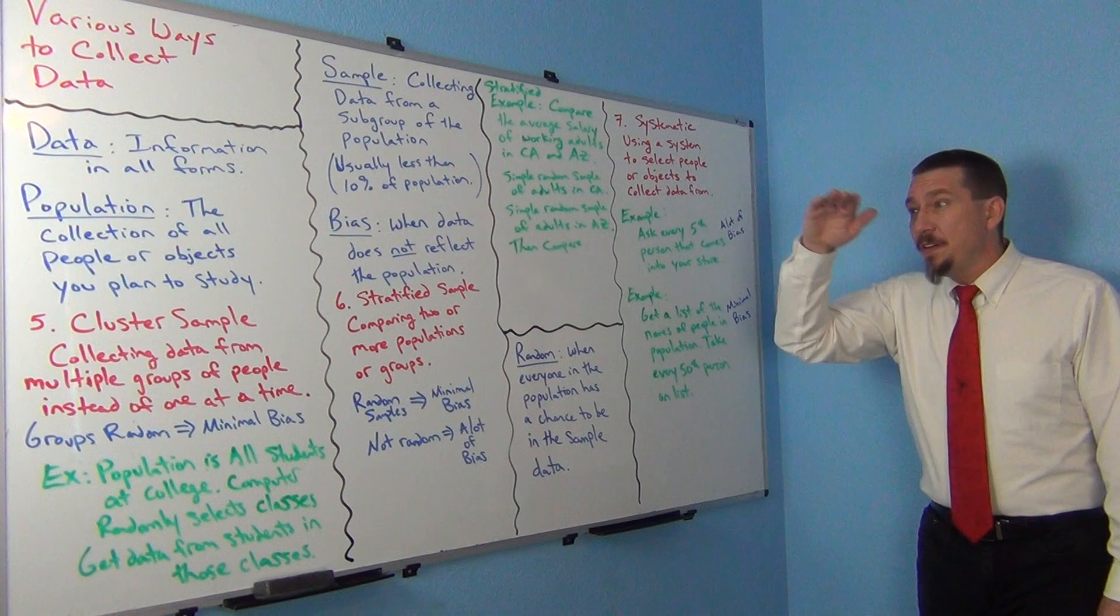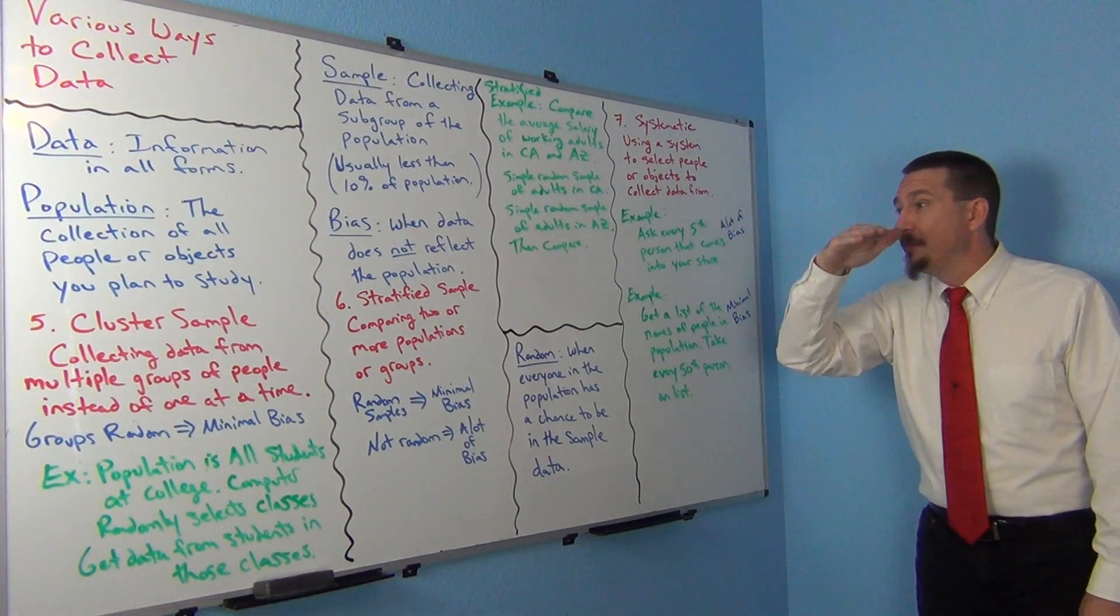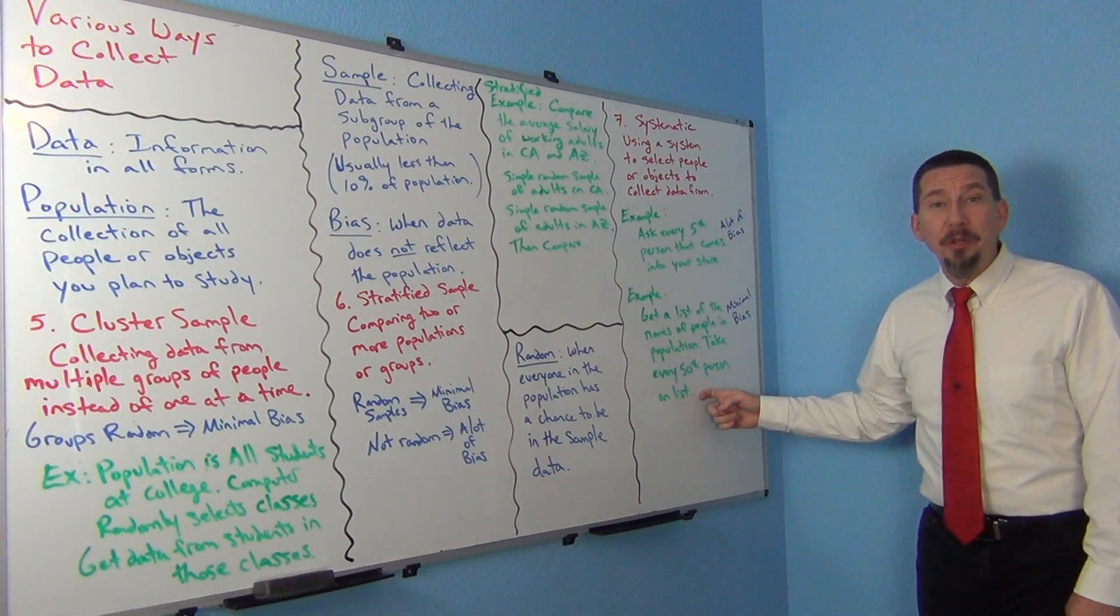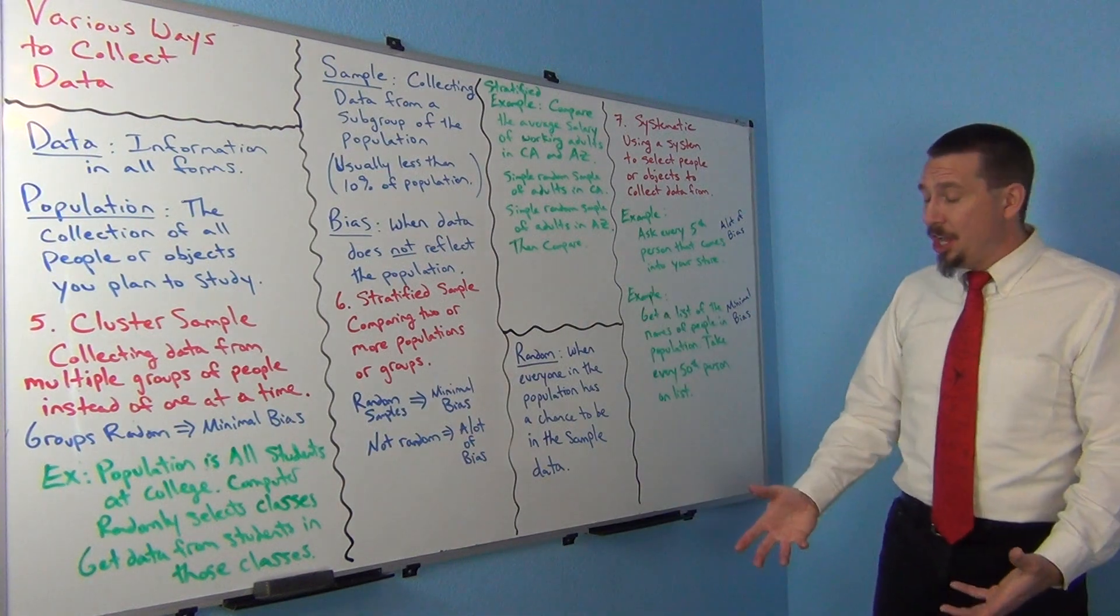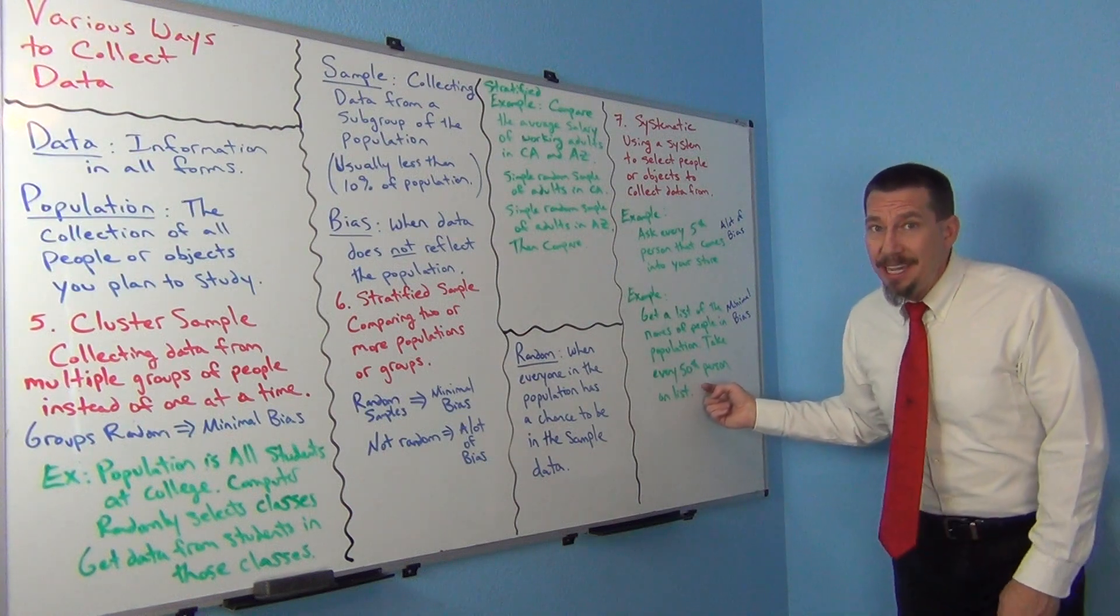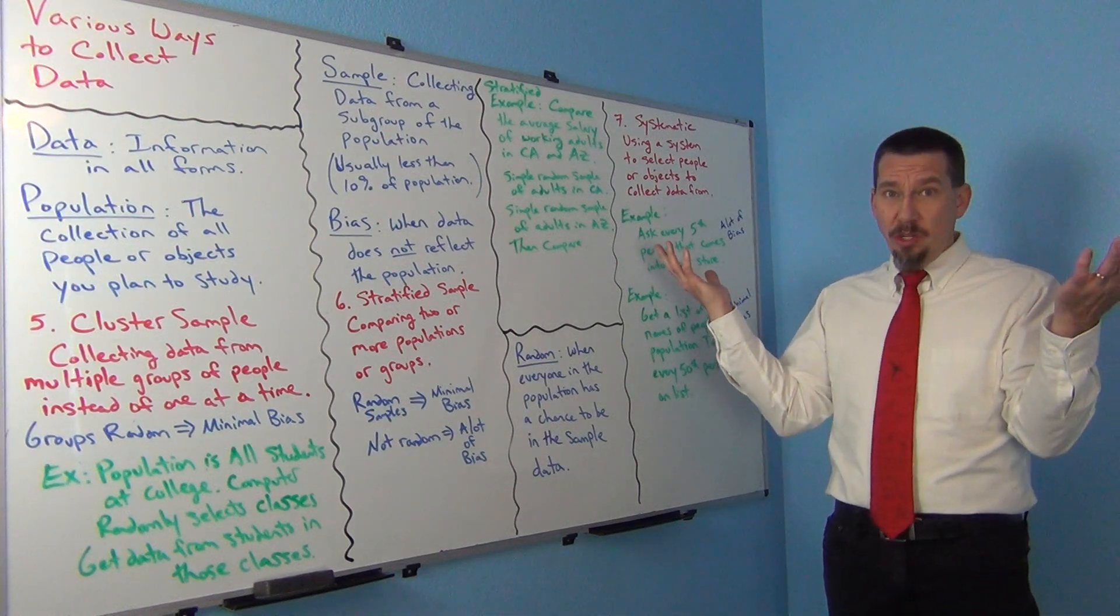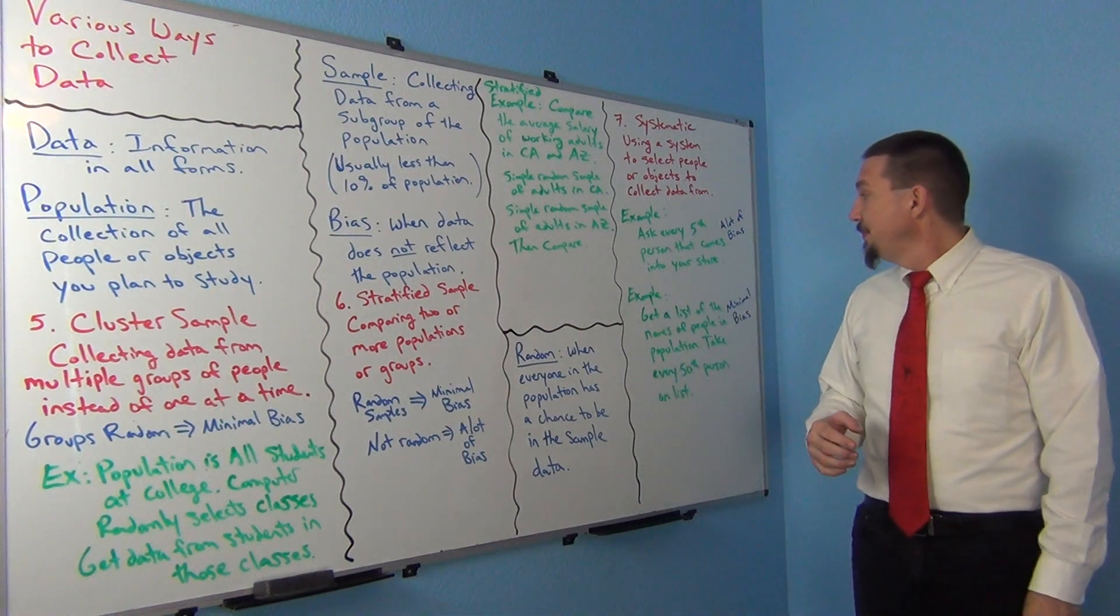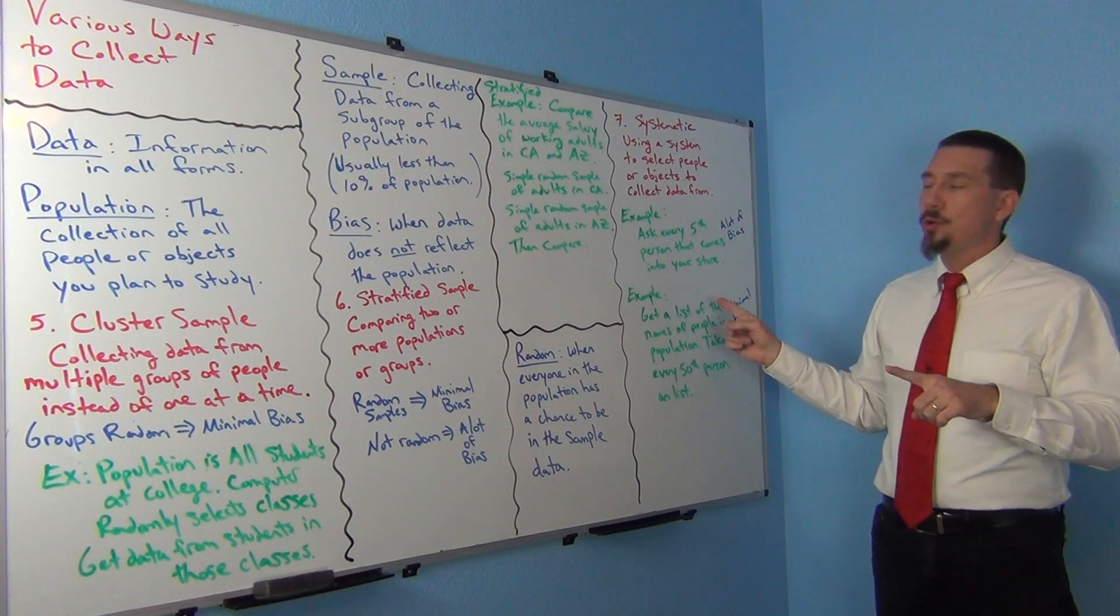Maybe I did number 50 and then number 100 and 150 and 200 and so on. That would probably be pretty good. I mean the list does have the entire population of the college on it. Now the only issue with that is it really would not be a random sample because if you think about it, numbers 1 through 49 on the list had no chance of being chosen. Only number 50 and number 100 and number 150 and so on.